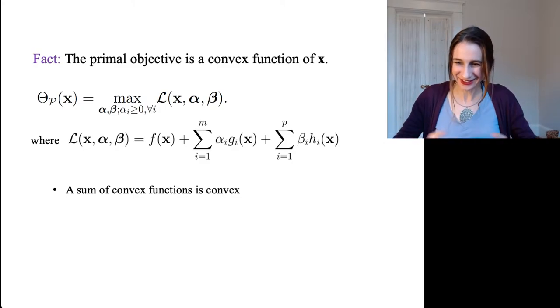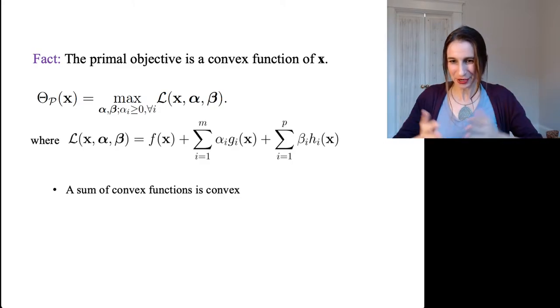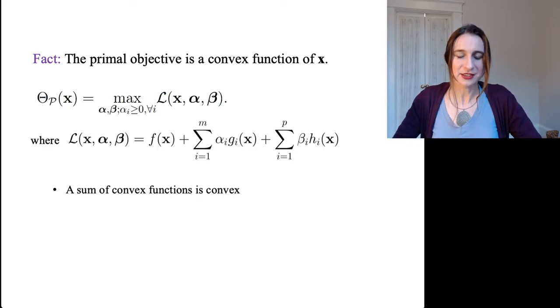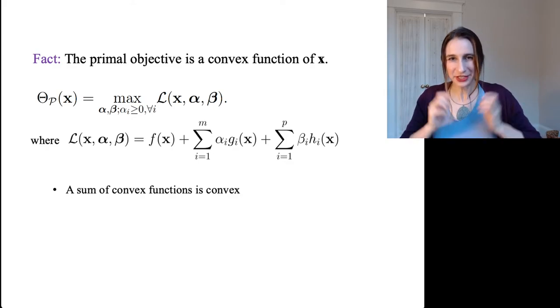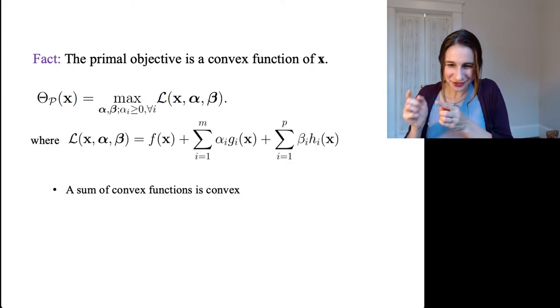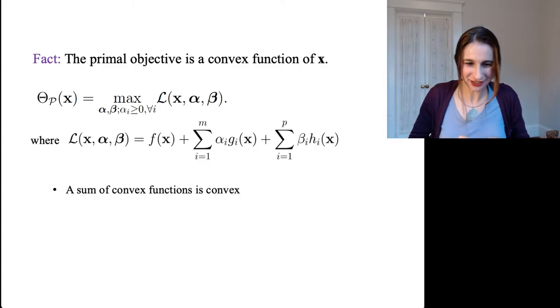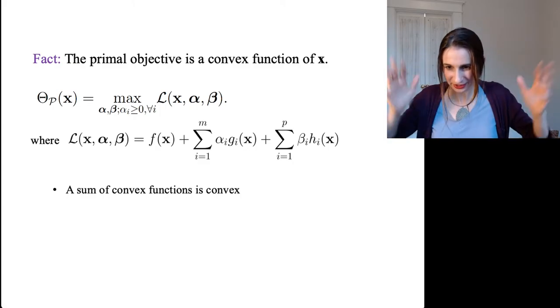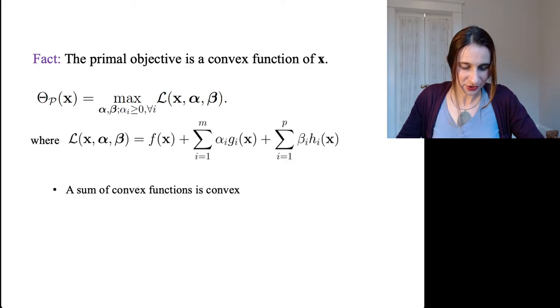Now as it turns out there's a bunch of facts that if you knew them you could determine immediately that the primal is a convex function of x. And in particular, the first thing you need to know is that a sum of convex functions is convex. So that means if I can prove that each of those terms is convex then I'm good.